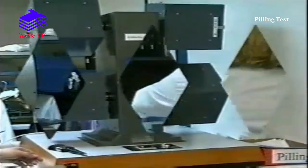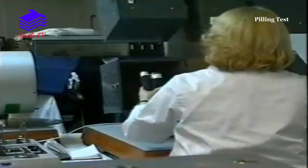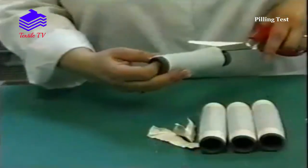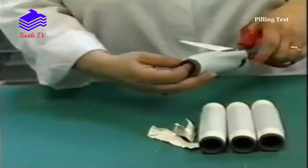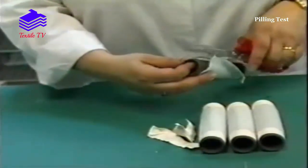When the machine stops, the tubes are removed and cut open along the seam.